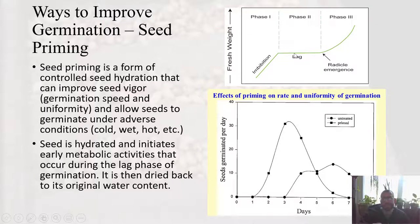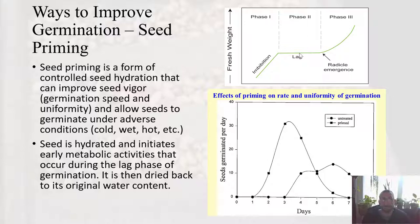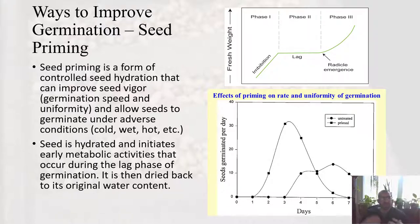In this lag phase, DNA starts being repaired, proteins start being made, and right when we get to that lag phase, we dry the seed out again — back to its original water content. Later when we go to plant and germinate these seeds, they have a kickstart of this process. They already had some metabolic processes occur during germination, so they should germinate faster and more uniformly when primed. You can see this in the data: primed seeds have a much lower spread than unprimed seeds.